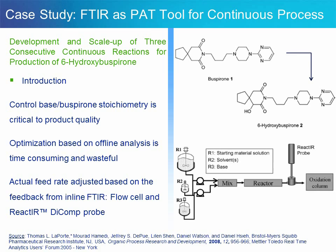When doing continuous processing, you have to consider the fact that as you are optimizing the process parameters or trying to reach steady state, product of not good enough quality is coming out of the column. Any tool that can speed up the feedback control cycle reduces the amount of waste. The process itself is about deprotonation of buspirone 1, the resulting anion being subsequently oxidized and converted after quench into 6-hydroxybuspirone. The REACT-IR probe is located right at the reaction column outlet, and then the anion stream is fed into the oxidation column.